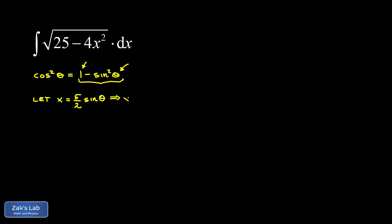You can check that this does the right thing. When I square x I get 25 fourths sine squared theta. So when I substitute that in, the 4s are going to cancel and I'm left with a factor of 25 that I can factor out of the square root, giving a simple 1 minus sine squared theta. Completing our substitution, dx is going to be 5 halves cosine theta times d theta.